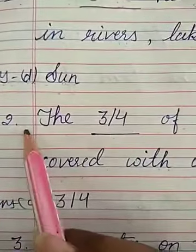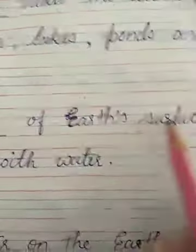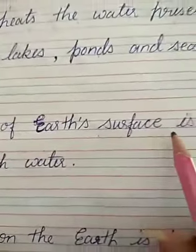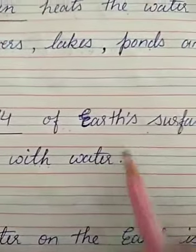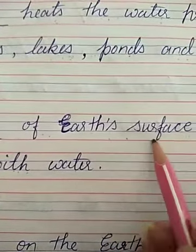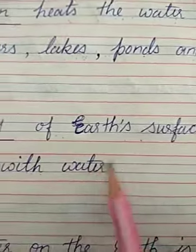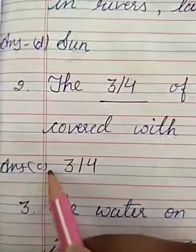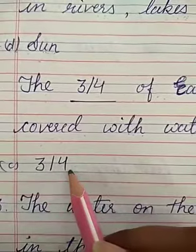Question number 2. The dash of earth's surface is covered with water. How much of the earth's surface is covered with water? The answer is option C: three-quarters, or 3/4.